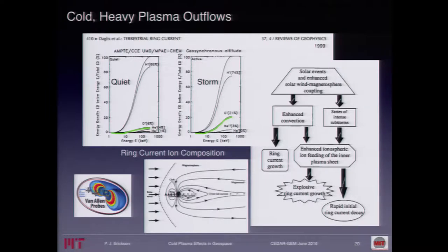Heavy stuff, if you look at the Alfvén formula, is going to mass-load field lines more than the lighter stuff, and that's going to fundamentally alter the electrodynamics and particle trajectories. So this turned out to be very important in looking at the complex dynamics of how the ring current varies. But once again, a lot of it starts with the production of cold plasma in the ionosphere and the transport of it to a place where it can get out and participate in all of this.